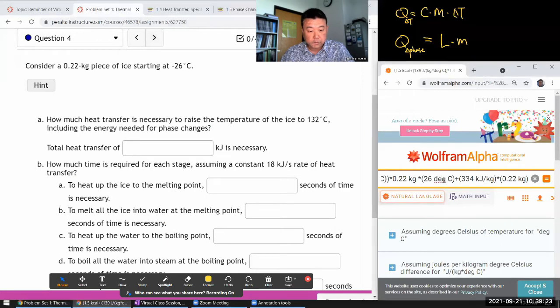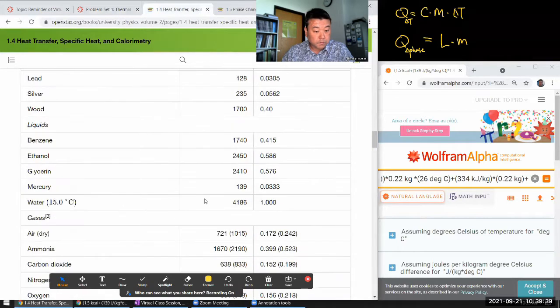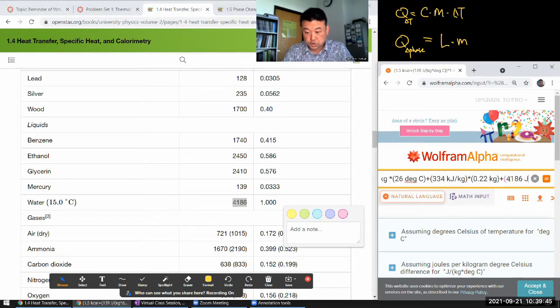And now we need water going from zero degrees to 100 degrees C before it's ready to turn into water vapor. So it's going to be plus - I need a specific heat capacity again, of water: 4186 joule per kilogram times degrees C, times 0.22 kilogram again, times the change of temperature, 100 degrees C. That's the third stage of water getting to the boiling point.